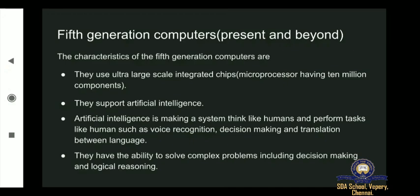What is artificial intelligence? Artificial intelligence is making a system think like a human — how we think, laugh, smile, and cry. Making a system feel and perform what humans do is called artificial intelligence. That is what computer engineers are trying to achieve today: to make a system think like a human and perform tasks like humans, such as voice recognition, decision making, and translation between languages.